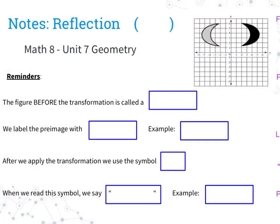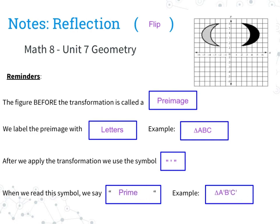Welcome back for our unit talking about transformations. Today's transformation is reflection, or better known as flip. The figure before the transformation is called the pre-image, and we label the pre-image with letters. So for example, if we had a triangle, we'd have triangle A, B, C. After we apply the transformation, we use a little mark that looks like an apostrophe, and when we read this symbol we call it prime. So for example, we have A prime, B prime, C prime. Now let's go ahead and take a look at that in some examples.